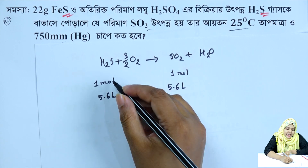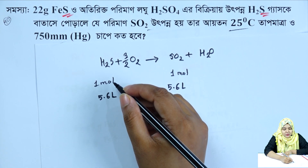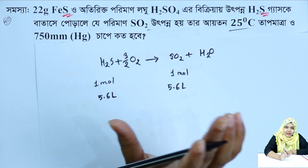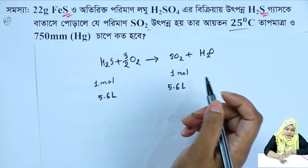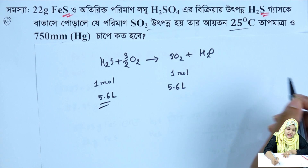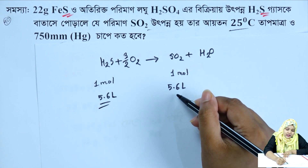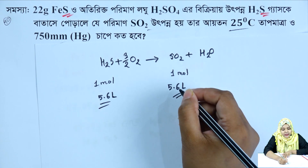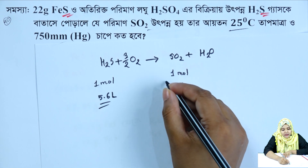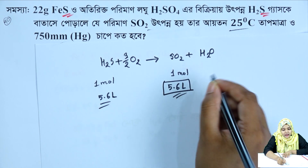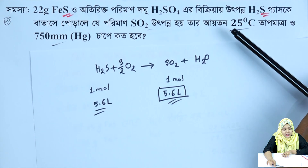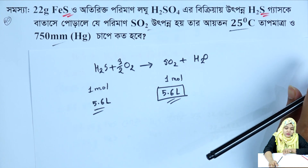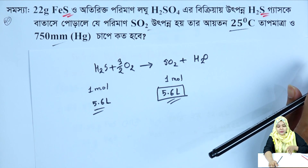By calculation, 5.6 litres hydrogen sulfide gives 5.6 litres sulfur dioxide. Now we convert this from STP to 25 degrees Celsius and 750 mmHg pressure.